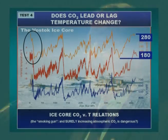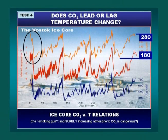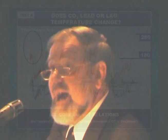Test number four is this wonderful diagram — probably one of the most exciting science diagrams of the 20th century — from the Vostok ice core. The orange curve at the top is the carbon dioxide, and the red curve in the middle is the temperature. We see a very close correlation between the orange and the red curves, which led people to immediately say, 'Aha! There's the smoking gun. We told you so. Every time the carbon dioxide goes up, the temperature goes up. Every time it goes down, the temperature goes down.'